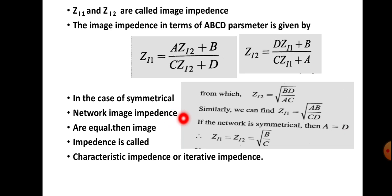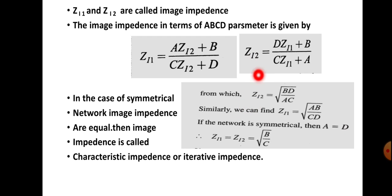For a symmetrical network, we know that Z11 equals Z22. In the case of a symmetrical network, the image impedances become equal. When the image impedances are equal, that impedance is called the characteristic impedance or iterative impedance. So for a symmetrical network, ZI1 equals ZI2 equals the square root of (B/C). This represents the characteristic impedance of a symmetrical network.